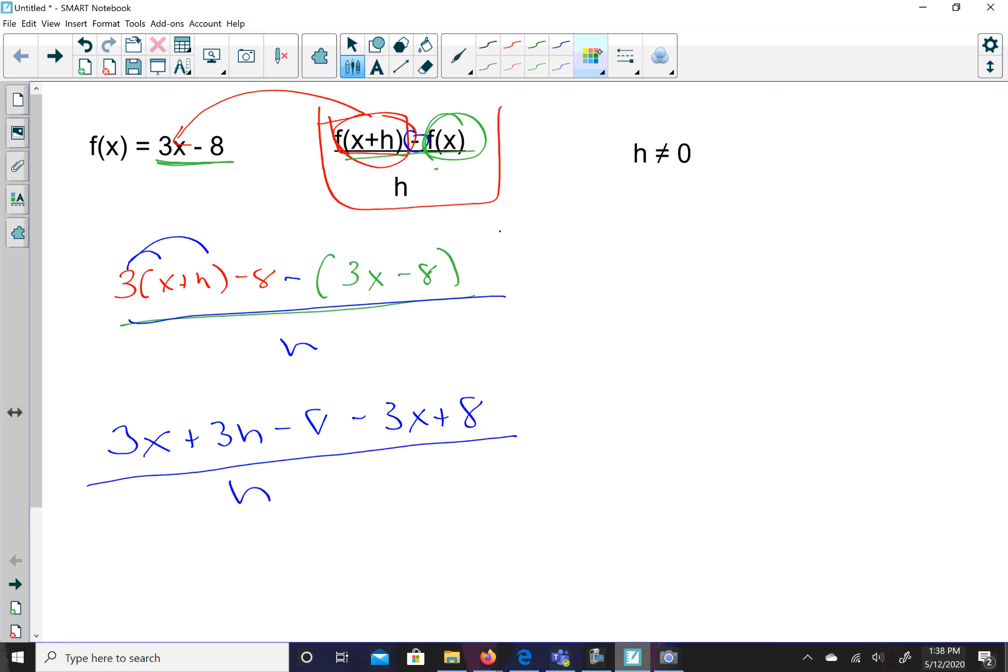When I look at this, I realize that the 3x and the negative 3x will equal 0. The negative 8 and the positive 8 will equal 0. So I'm left with 3h over h. And the h's will simplify, and my final answer is just 3.